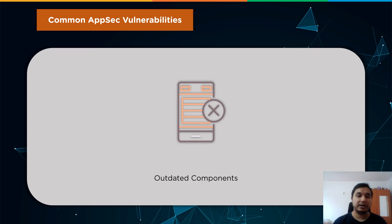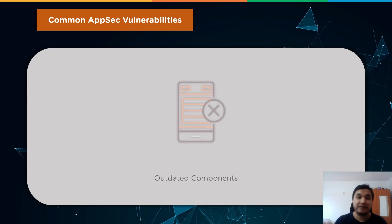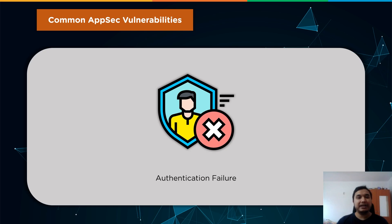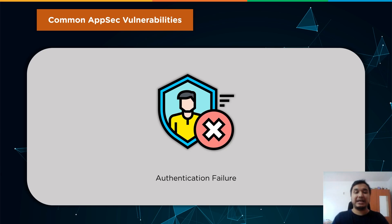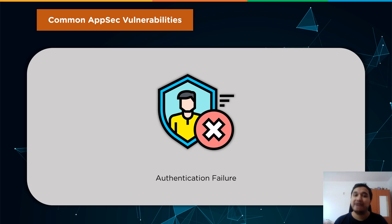Another major vulnerability involves outdated components. Vulnerable and out-of-date components encompass any vulnerability caused by obsolete or unmaintained software. This can happen if you construct or use an application without first learning about its core components and versions. Additionally, identification and authentication failures — previously known as broken authentication — encompass any security issue involving user identities. Identity attacks and exploitation may be avoided by implementing secure session administration, authentication, and validation for all identities in an organization.